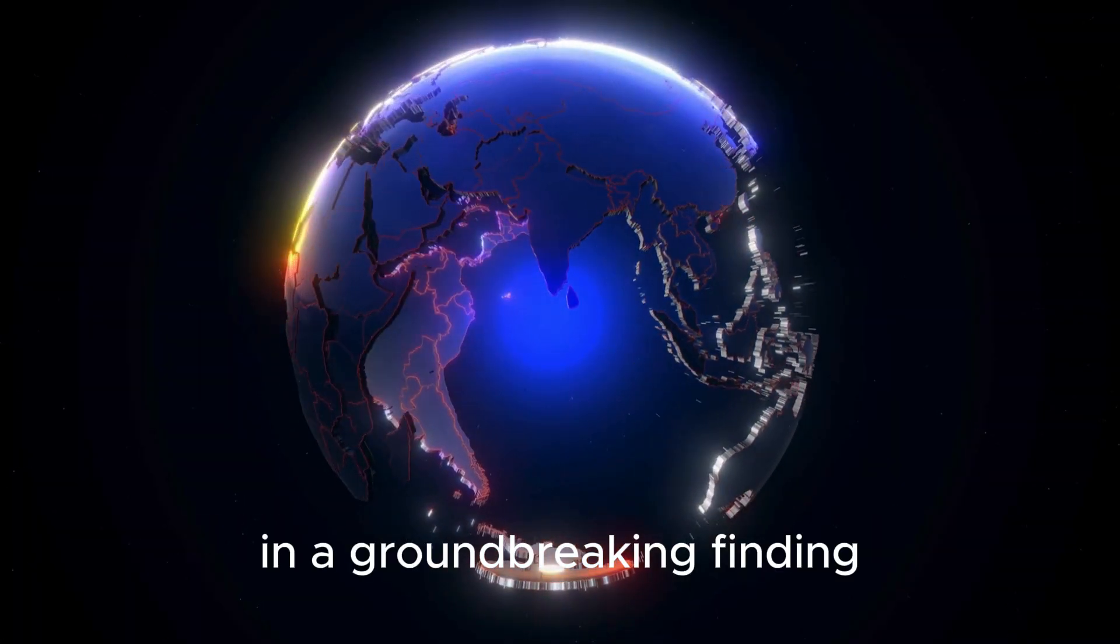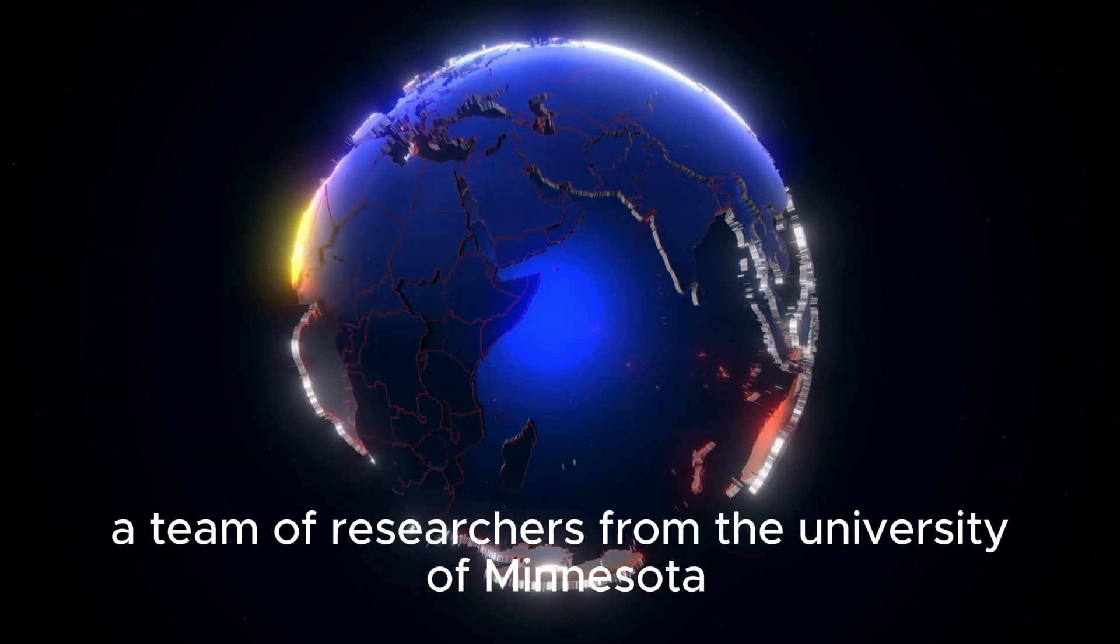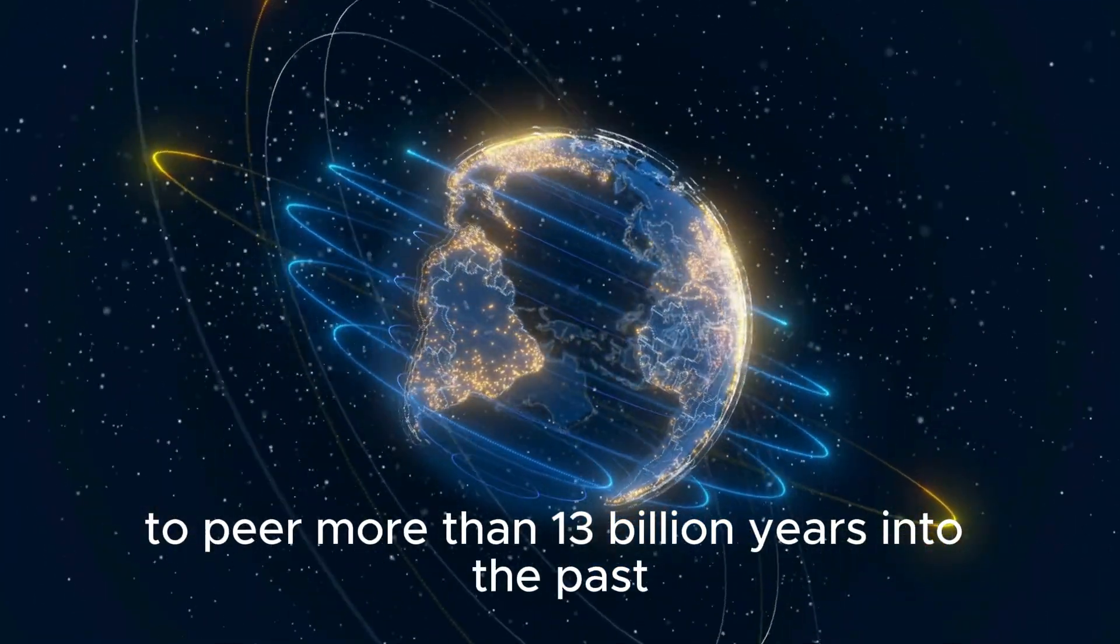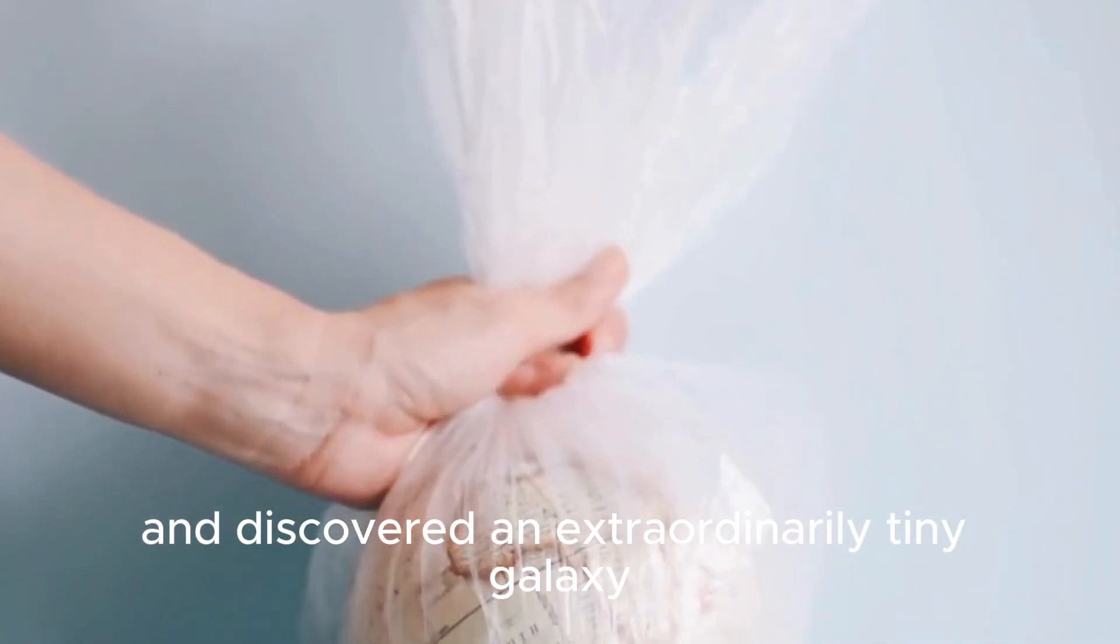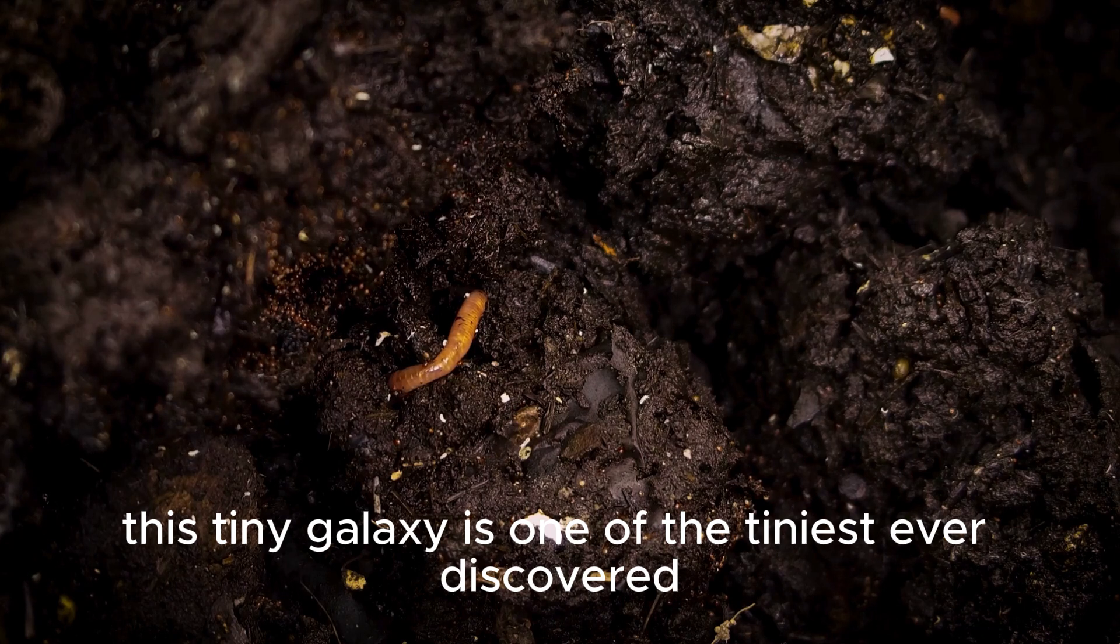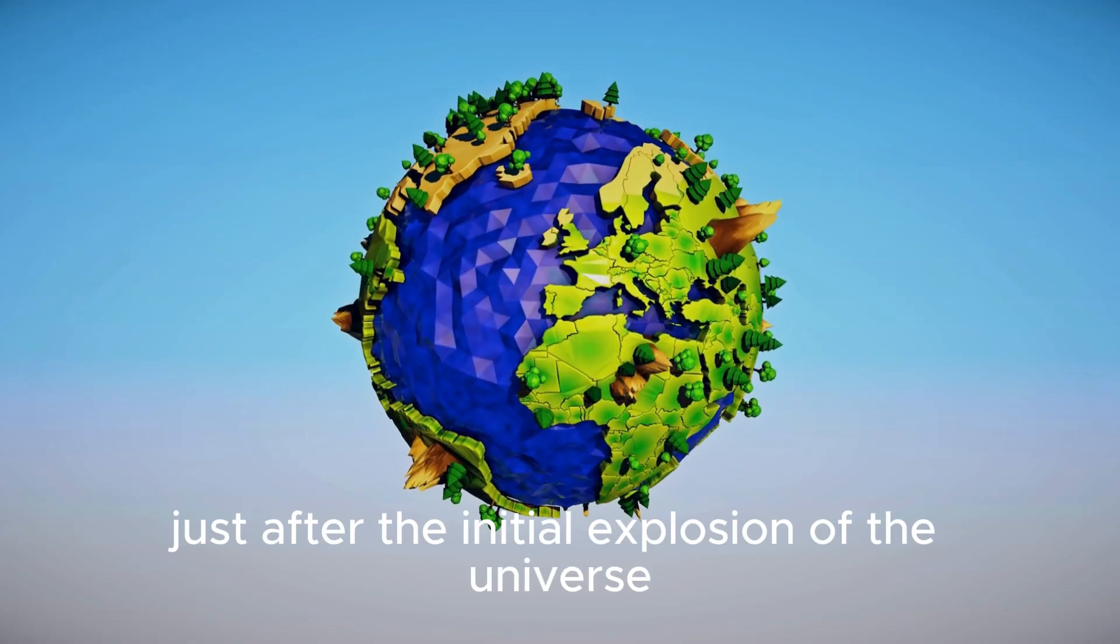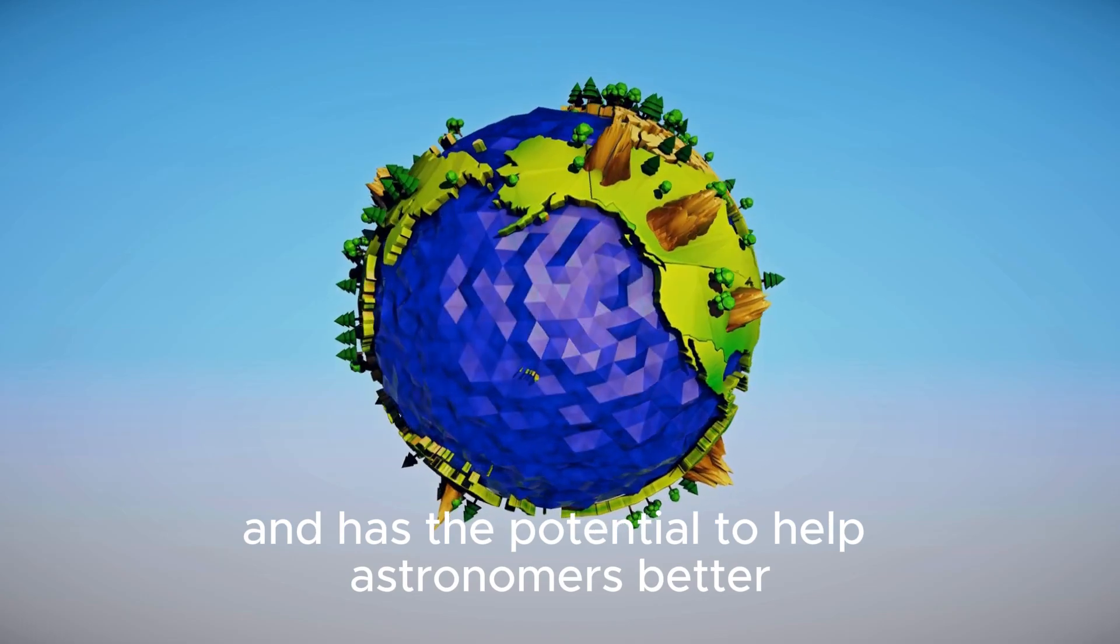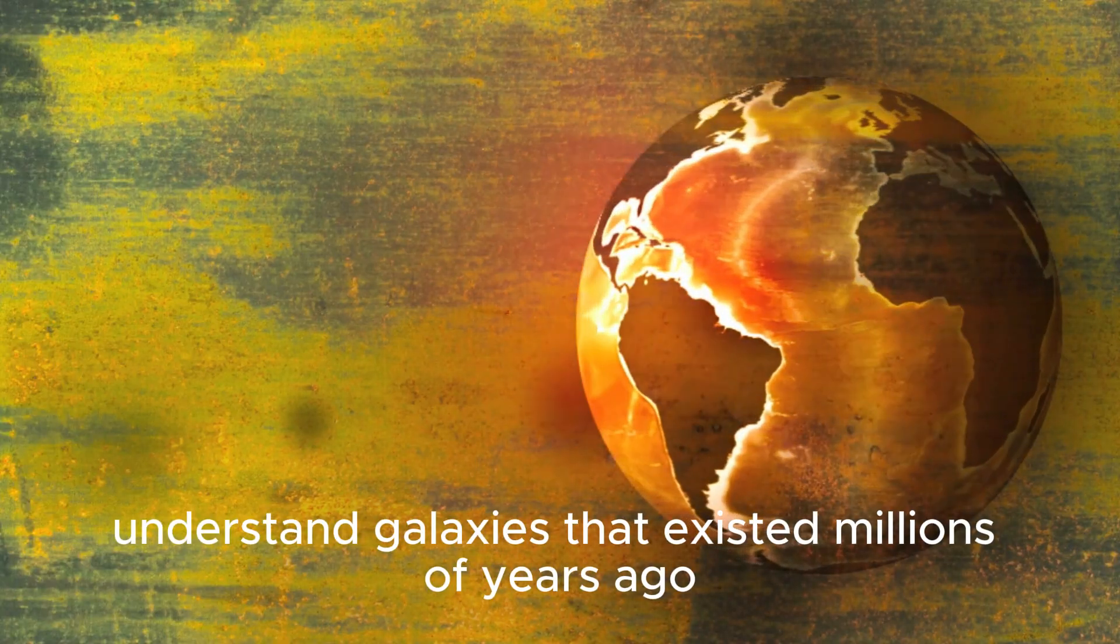In a groundbreaking finding, a team of researchers from the University of Minnesota used the James Webb Telescope to peer more than 13 billion years into the past and discovered an extraordinarily tiny galaxy that has been developing stars at an extremely fast rate given its dimensions. This tiny galaxy is one of the tiniest ever discovered at this distance, just after the initial explosion of the universe, and has the potential to help astronomers better understand galaxies that existed millions of years ago.